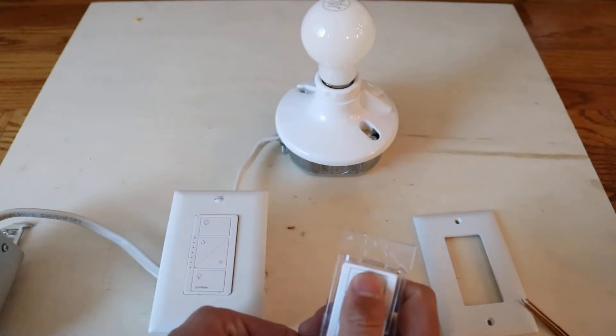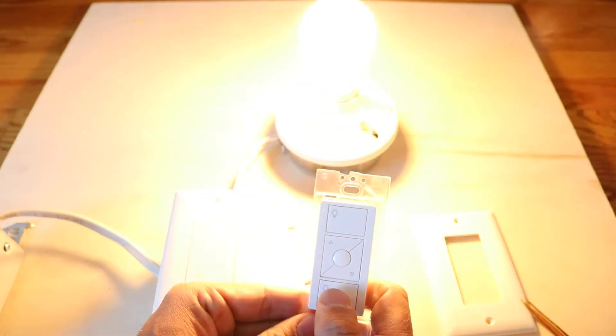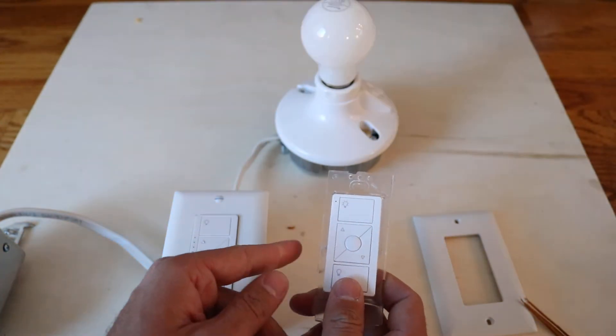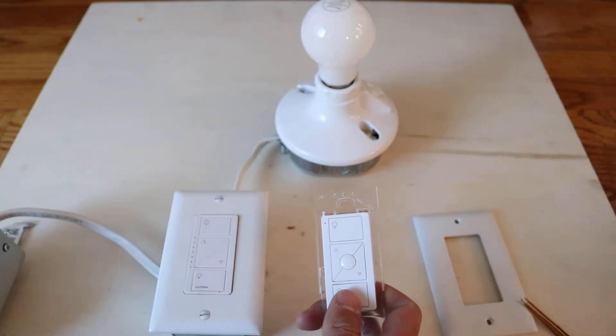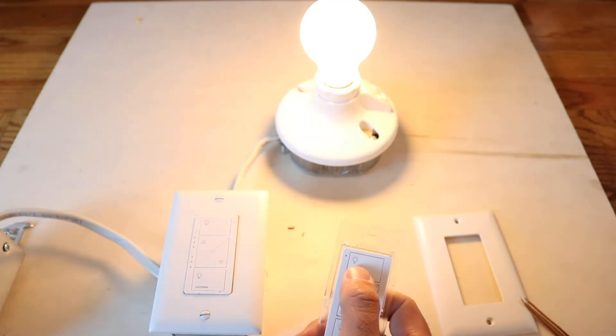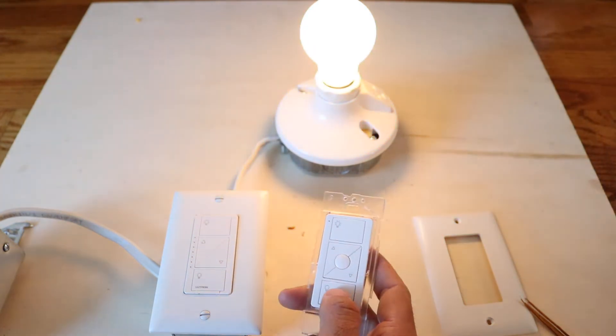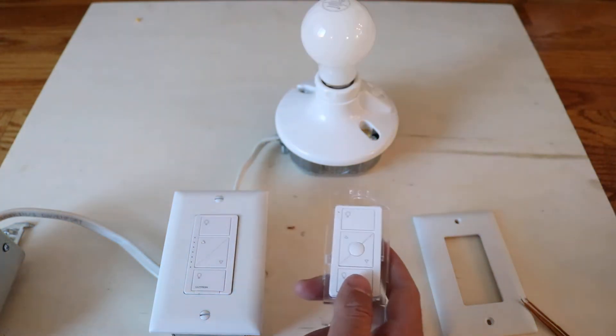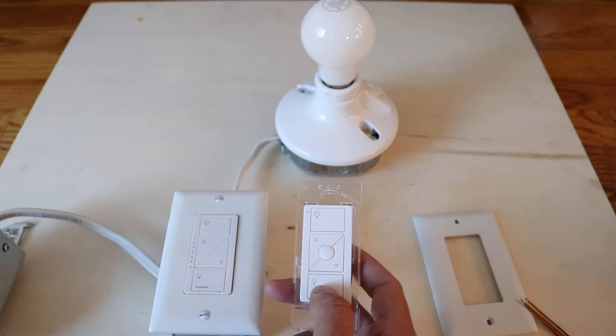And we'll show you, obviously, it's still working. Okay, so now I'm going to show you how you remove your Pico remote from the Lutron Caseta or how you deprogram it. So, obviously, one more time, we'll show you that it's on. Okay, turn it off. I have found it's better if you have the light switch off when you do this remote.